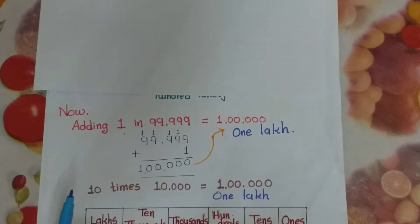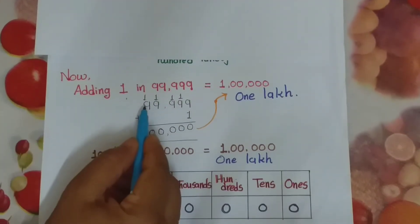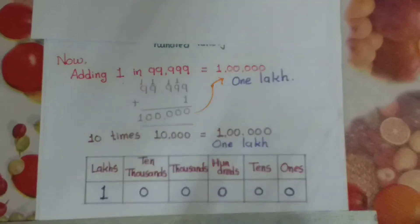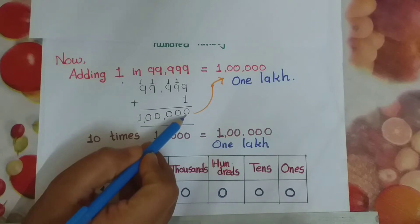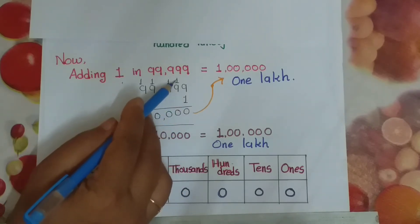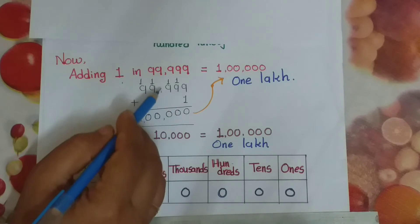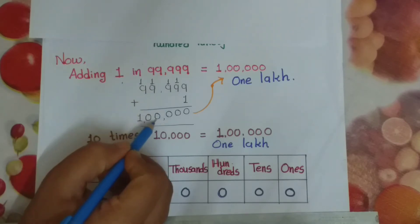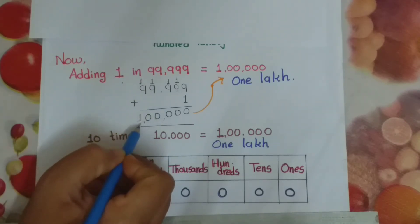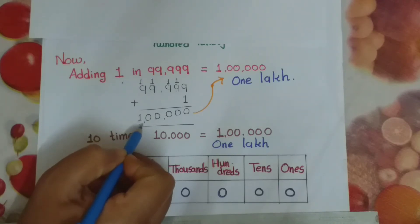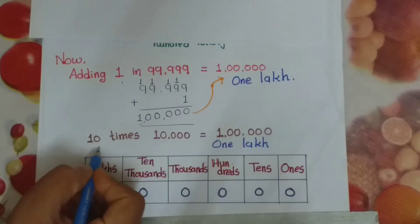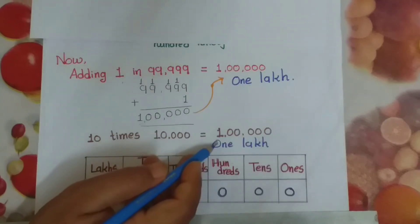See here — the addition is: 99,999 plus 1. Then 9 plus 1 is 10, so 0 comes here, carry 1. Again 1 plus 9 is 10, 0 here, carry 1. Again 1 plus 9 gives 0, carry 1. 1 plus 9 gives 0, carry 1. And 1 plus 9 is 10. So we get 1 lakh. In 1 lakh, five zeros come: 1, 2, 3, 4, 5. It is 1 lakh, meaning 10 times 10,000 equals 1 lakh.